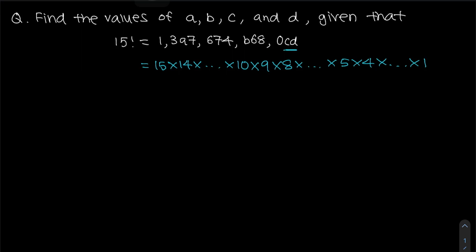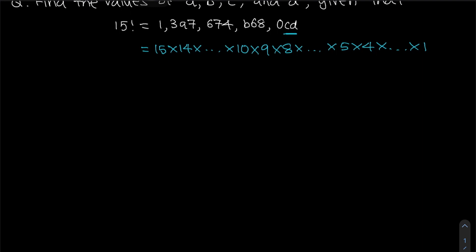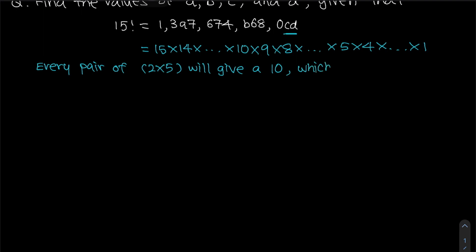The first part we need to tackle is c and d. Recall that every pair of 2 times 5 will give a 10, and when you multiply something by 10, this will actually give you a 0 at the back. Since we have this equation 15 times 14 all the way until 1, there will be more 2s than 5s.